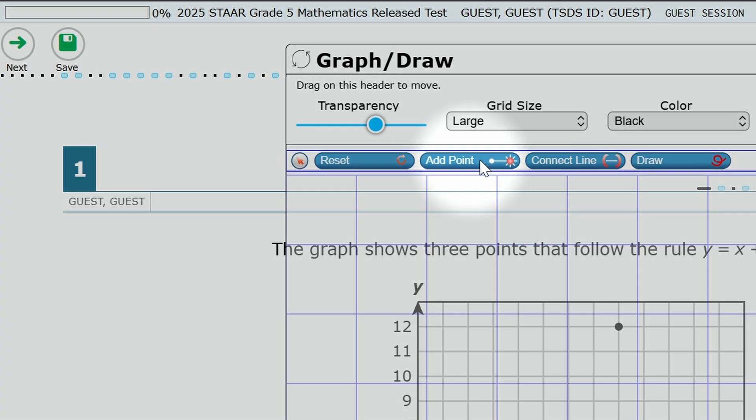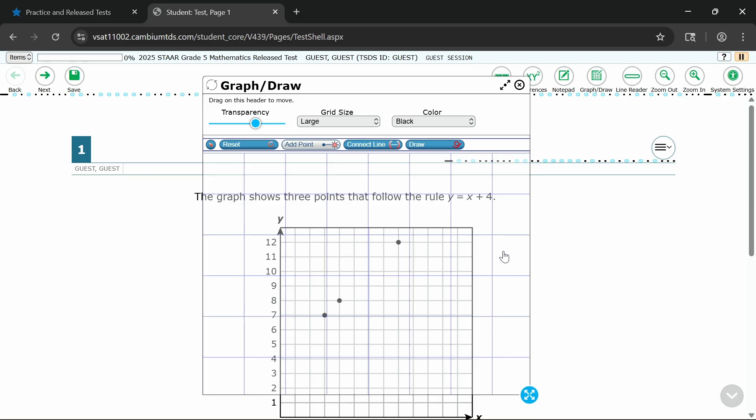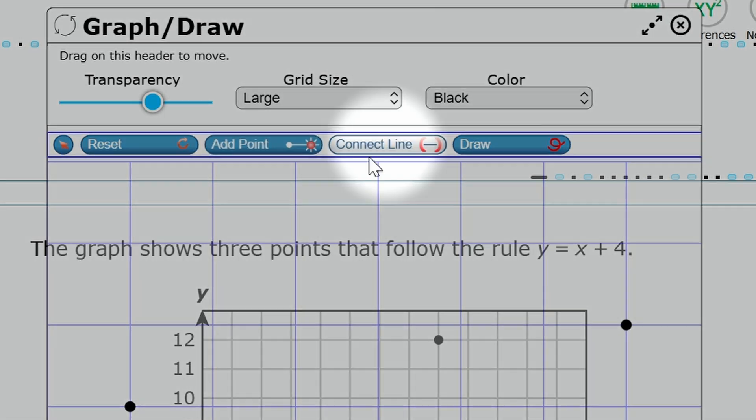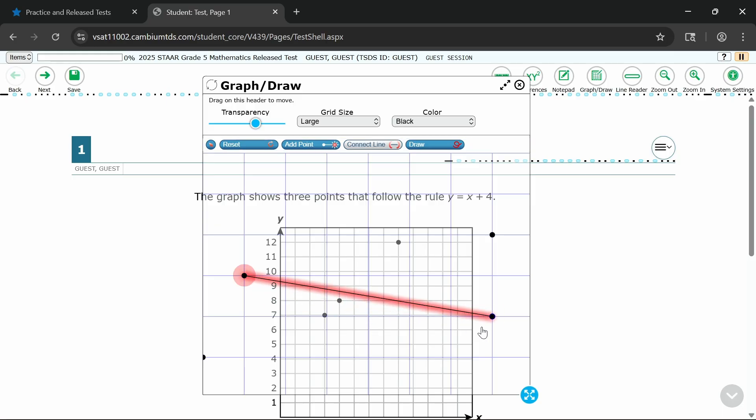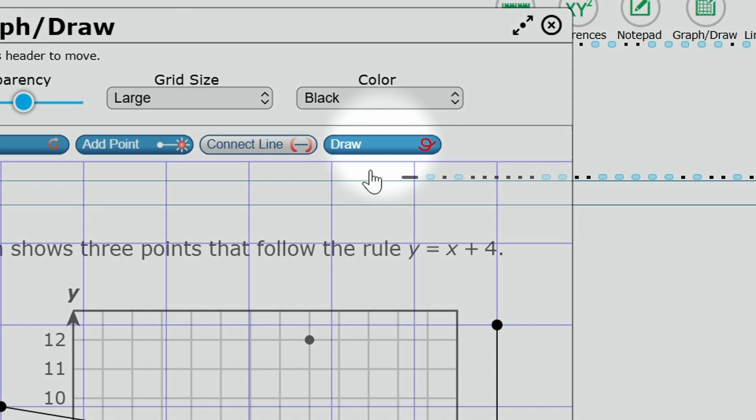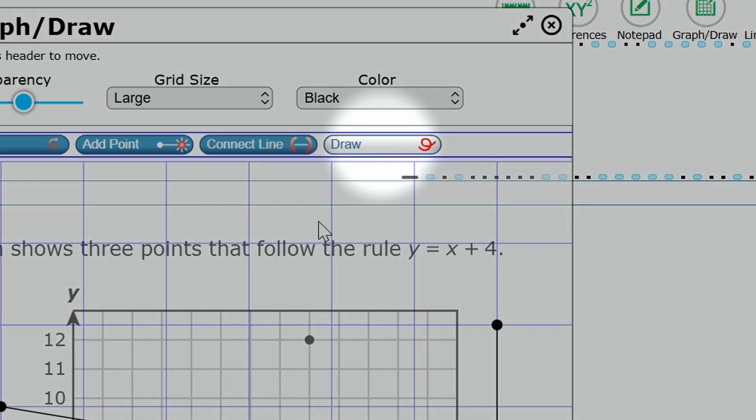Use Add Point to plot a point. It'll snap to the nearest grid line. Connect Line lets you link points with straight lines. Finally, Draw is a free-form pen to sketch anything you need.